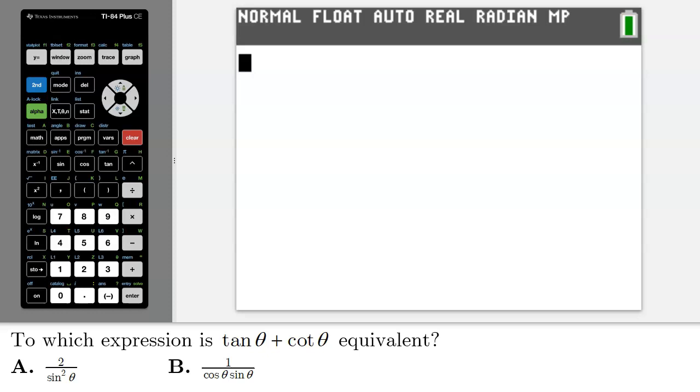To which expression is tan theta plus cotangent theta equivalent? Option A: 2 divided by sine squared theta, or option B: 1 divided by cosine theta times sine theta.